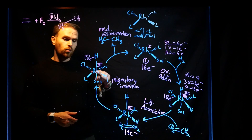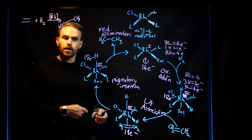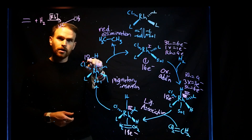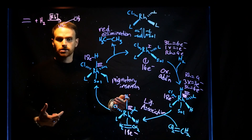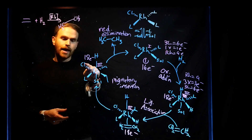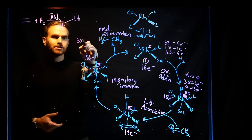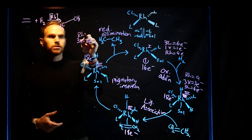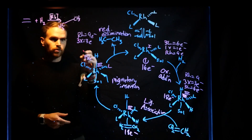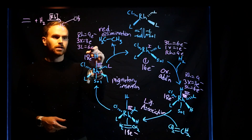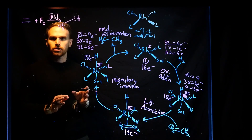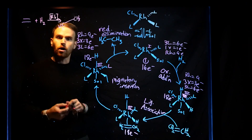The next step is reductive elimination, which reduces the oxidation state by 2 and the overall electron count by 2. We can confirm by electron counting: hydride, alkane, and chloride are all X-type ligands — 3 X-type ligands give 3 electrons; rhodium gives 9 electrons; 2 Ls and solvent (also an L) give 3 Ls = 6 electrons. So 9 + 3 + 6 = 18 electrons. This electron counting formalism is something you should get in the habit of doing as we move through more catalytic cycles, and you should expect to do it on your exam.